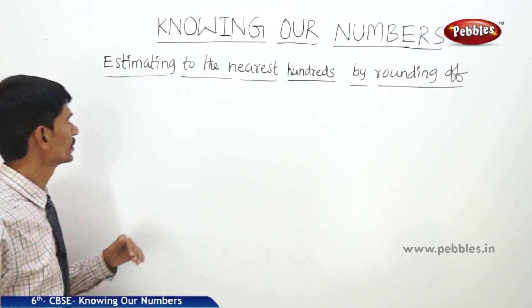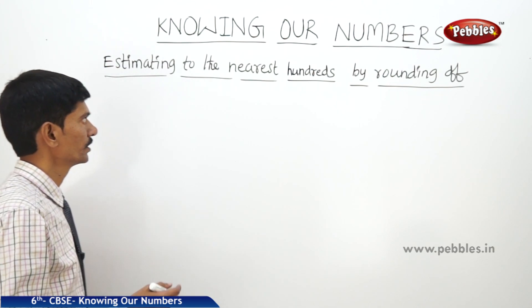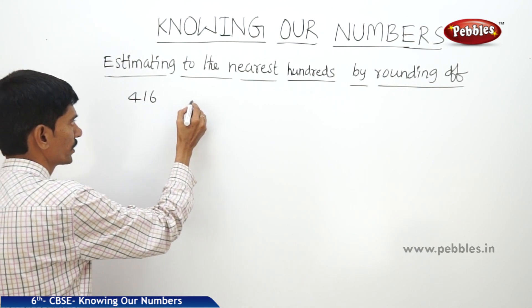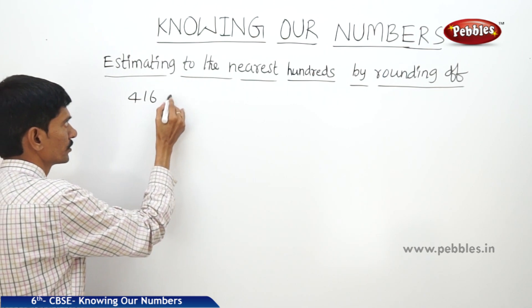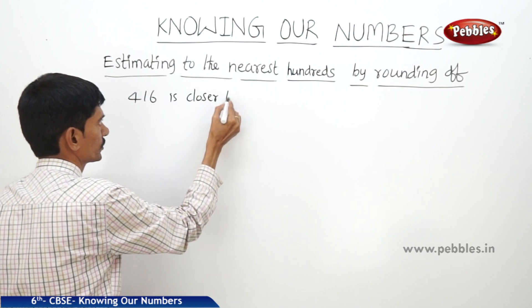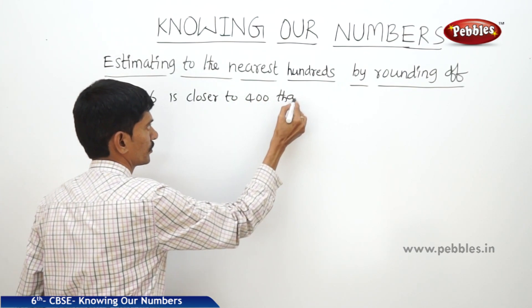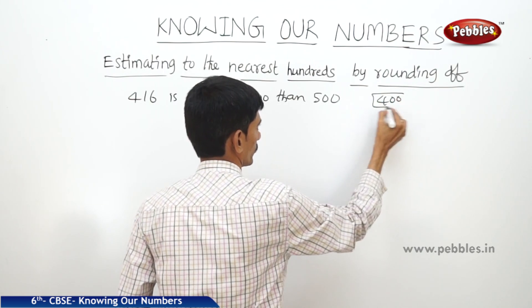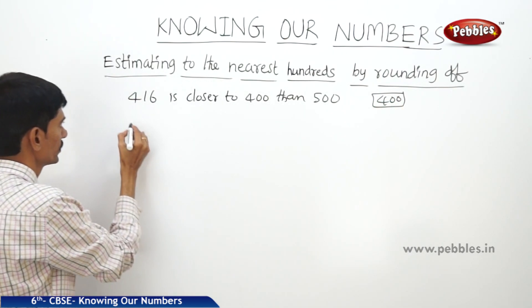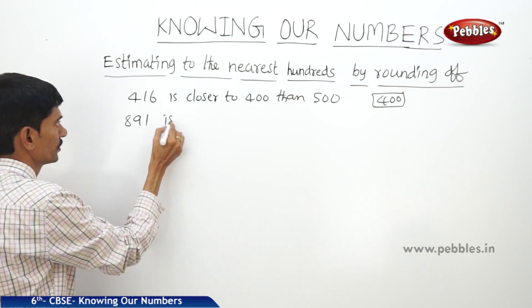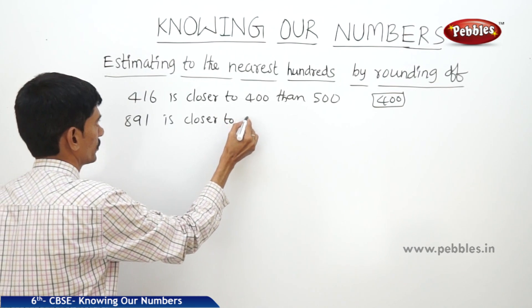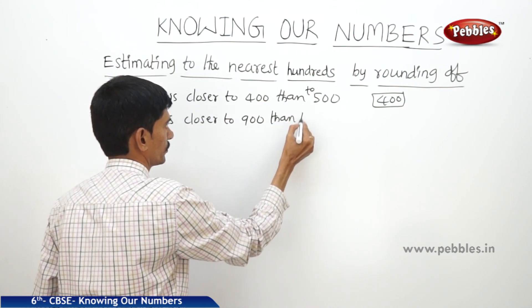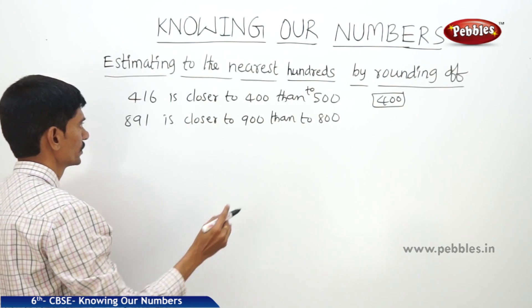Now the next topic is estimating to the nearest hundreds by rounding off. Now if you take the number 416, it is closer to 400 than to 500, so it can be rounded off to 400. And 891 is closer to 900 than to 800, so it can be rounded off to 900.